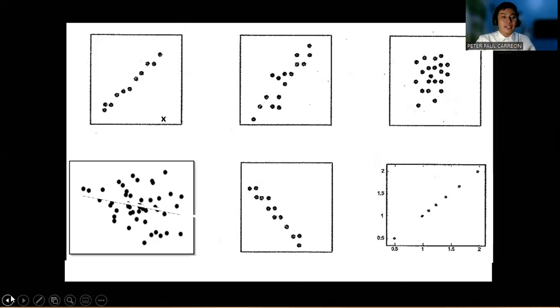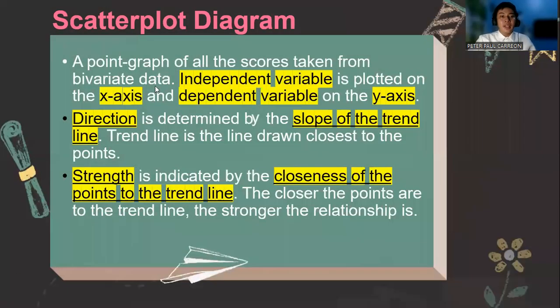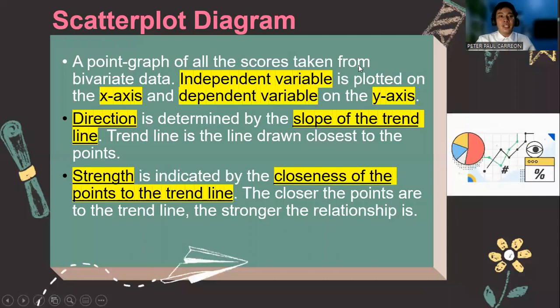So the scatterplot diagram looks like this one. It's a point graph of all scores taken from the bivariate data. So the independent variable is plotted on the x-axis and the dependent variable is on the y-axis.